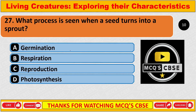What process is seen when a seed turns into a sprout? The correct answer is A: Germination.